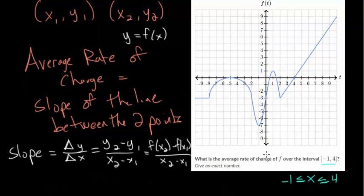But to find the average rate of change over this interval we essentially want to look at the graph at each of these points. We want to know their y values. So when x is -1, the y value is down at -7, and when x is 4 you can see the y value is at 0.